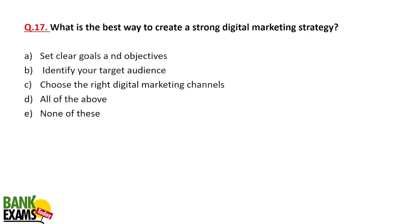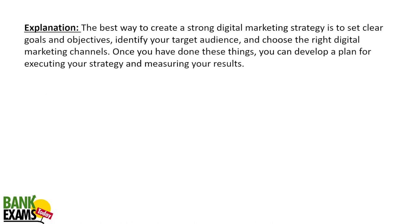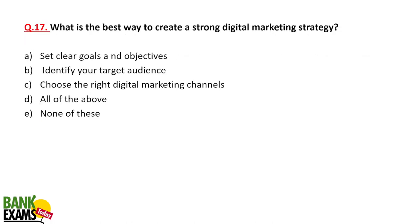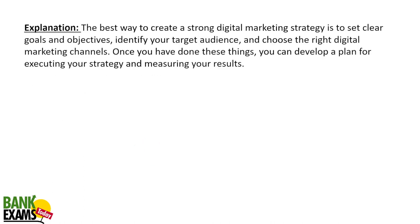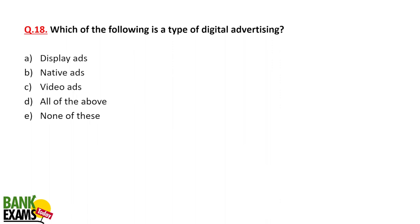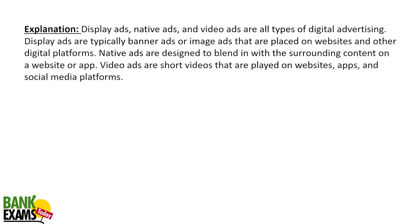The best way to create a strong digital marketing strategy is to set clear goals, identify your target audience, and choose the right digital channels. Most exam questions are based on terms — for example, affiliate marketing, referral marketing, or influencer marketing. Types of digital advertising include display, native, and video — all used in Google Ads.